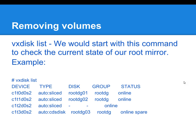VxDiskList is the command that you should begin with. VxDiskList will give you basic information about the discs that Veritas has under its control or is managing at the time. In this example, we can see that our VxDiskList shows us that we have a total of four discs in Veritas. We have one disc group, which is RootDG, and we have three discs in that disc group: RootDG01, RootDG02, and RootDG03. The third disc is marked as an online spare.